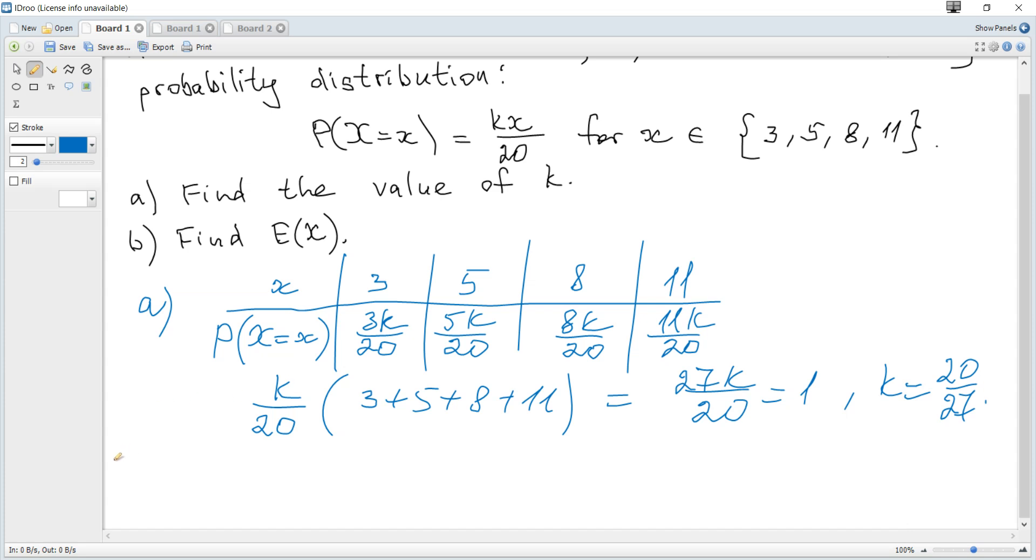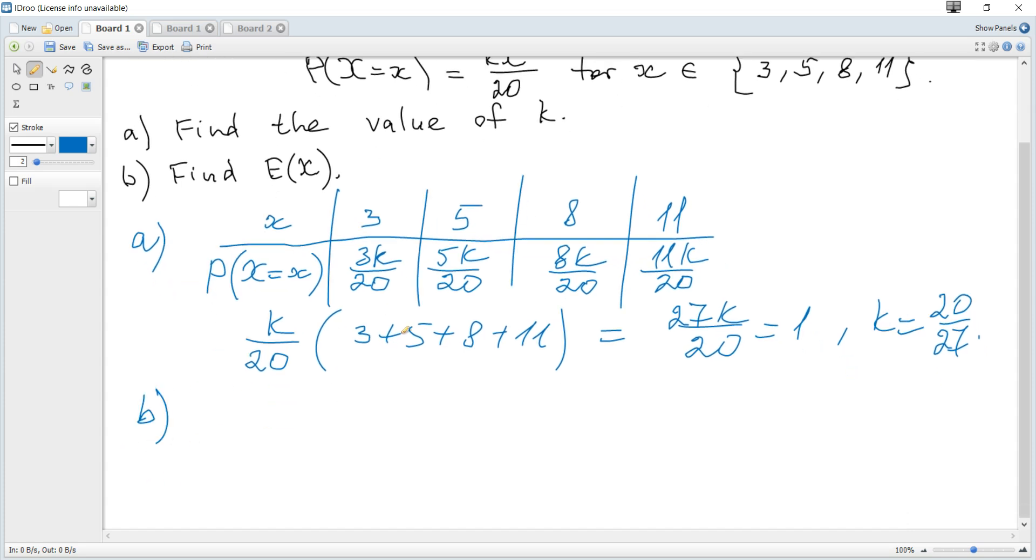The next question: Find the expected value of x. The formula is given in the data booklet and it says that it's a sum for all values of x, x multiplied by the corresponding probability. So how it works.